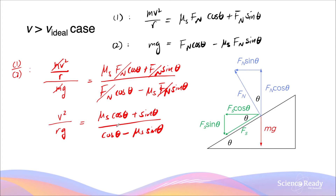If you take a closer look at the expression, you can see that if the coefficient becomes zero — that is, if friction is not present — the entire right-hand side fraction simplifies to just sinθ in the numerator and cosθ in the denominator. When you have sinθ divided by cosθ, this simplifies to tanθ. So when tanθ = v²/Rg, that is exactly the expression we derived in the previous video on a banked surface without any friction.